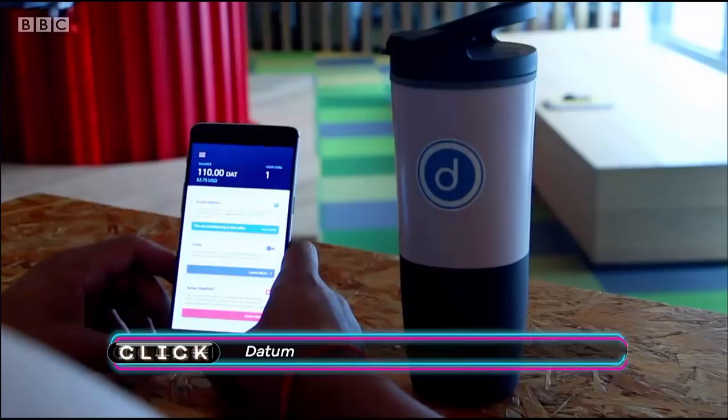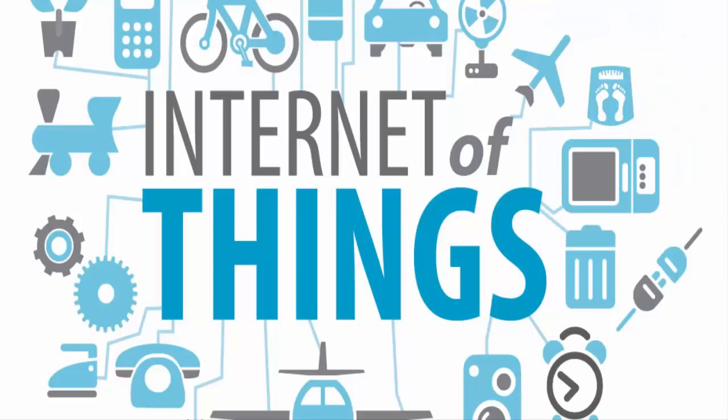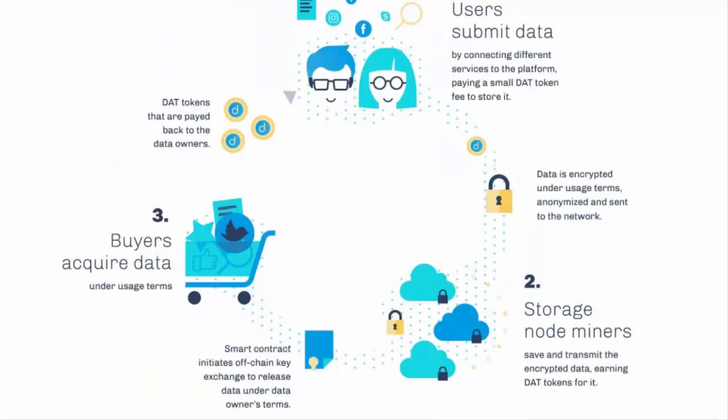First, users submit data. Data can be personal or business data and collections, telemetry or data from IoT devices and any other data source. Second, storage nodes provide compute power and storage capacity to store data in the decentralized network. Storage nodes are part of the BigchainDB cluster that allows Datum to provide global-scale storage of submitted data.